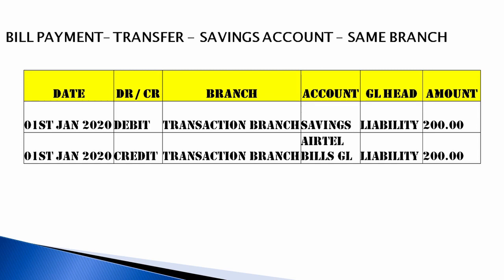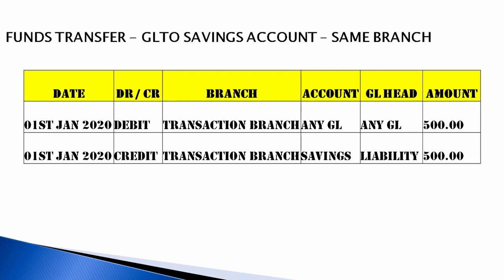For bill payment transfer when a customer requests to pay a bill from his account, the savings account is debited and credited to the bill payee account — it may be Airtel or BSNL — and the amount is then given to the service provider. For fund transfer from a GL to savings account, any GL can be debited and the savings bank account credited. The debit depends on the general ledger type — it may be income, expenditure, asset, or liability.